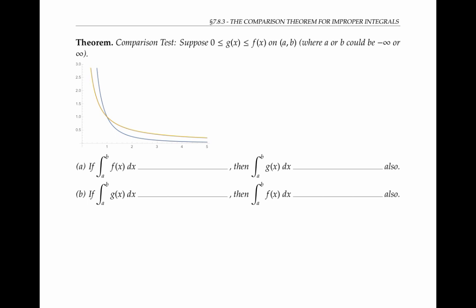Instead, by comparing it to the integral of a function that we know converges or diverges. So suppose that g of x and f of x are both positive-valued functions — they're both greater than zero for all x's on the interval [a, b]. And let's suppose also that g of x is less than f of x on that interval [a, b], where a or b could be infinity or negative infinity.